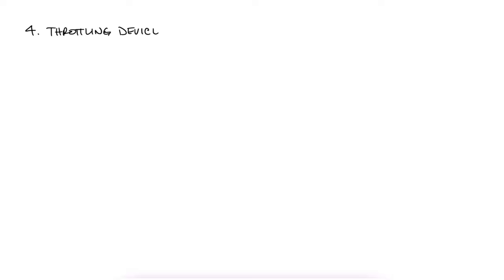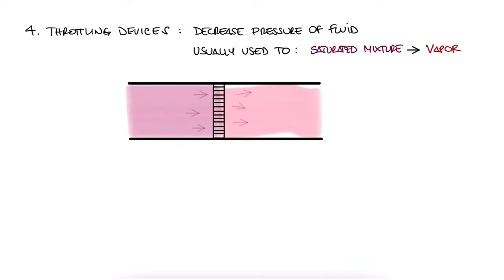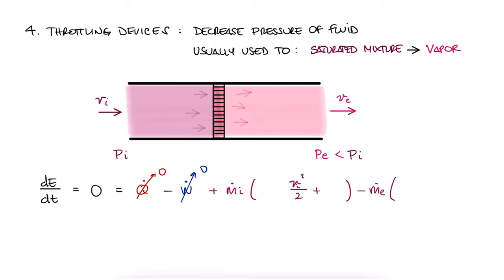Throttling devices decrease the pressure of our traveling fluid. It's typically used to bring a mixture of liquid and vapor to a vapor-only phase. It consists of a porous barrier that allows the fluid to flow, but of course this causes the pressure to drop. There is usually no heat transfer rate, no work rate. A change in velocity does exist, but just like the constant area duct, it's very small, so we can neglect the kinetic energy change, and the change in potential energy is zero.